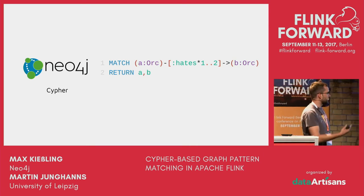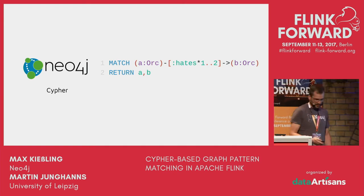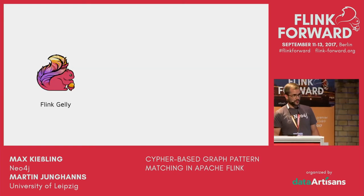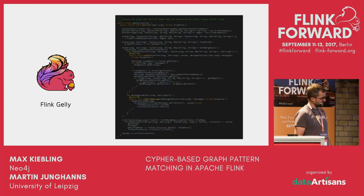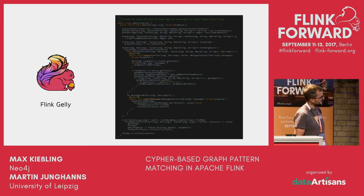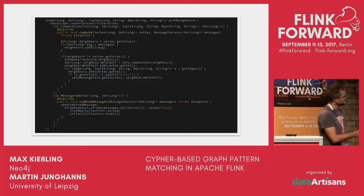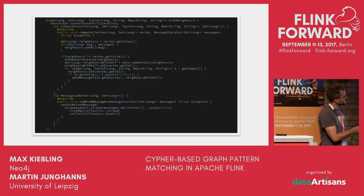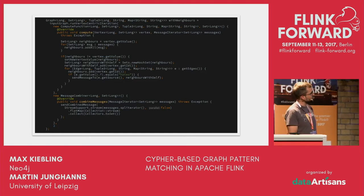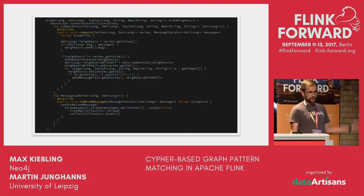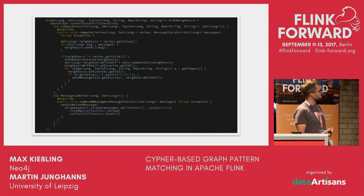You're asking for an orc A who hates another orc B over one to two hops — it's essentially the neighborhood of orc A. If you want to do this with Flink Gelly, the graph processing library in Apache Flink, you end up doing something like this: we used the Pregel API, implemented compute functions, and sent messages around. As you can see, to express the same thing you need a lot more code — it's error-prone, hard to maintain, and hard to extend.